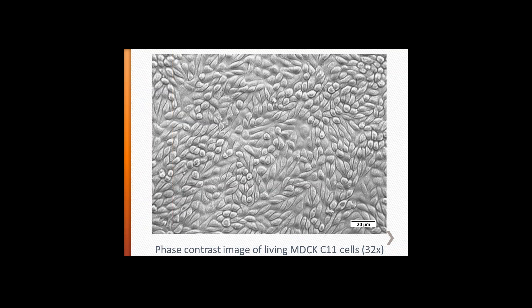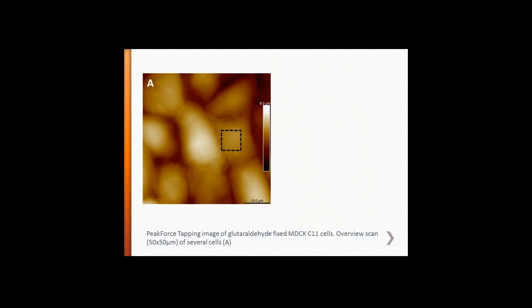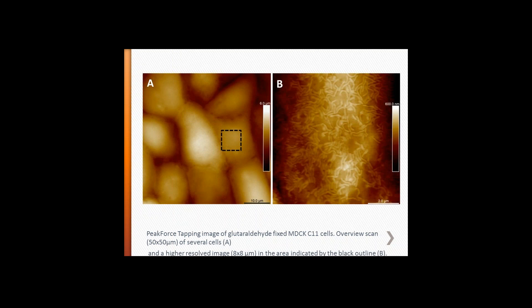These are MDCK-C11 cells as a fast contrast image, and as you can see, the height differences within the cell layer are large — challenging for a common short tip due to shadowing. Using the Peak Force QNM probe, we first imaged glutaraldehyde-fixed MDCK-C11 cells, with no shadowing effect visible. In the indicated square, a higher resolution scan reveals microvilli squeezed down to the surface — nicely shaped but not in their native configuration. Because they are fixed, they are stiff and not flexible, making them easier to image.